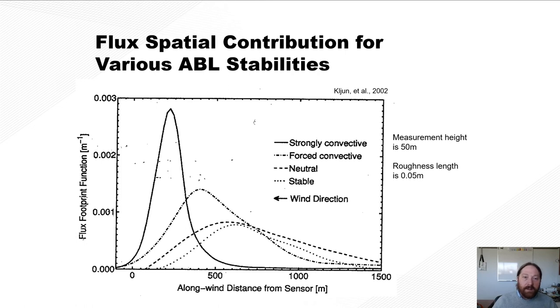Finally, atmospheric boundary layer stabilities can also influence where the contribution of flux is coming from in your footprint. So if you have really well-mixed atmosphere, strongly convective, say middle of the day, really, you know, lots of eddies, really strong mixed flux, most of that flux contribution within your footprint is going to occur closer to the tower.